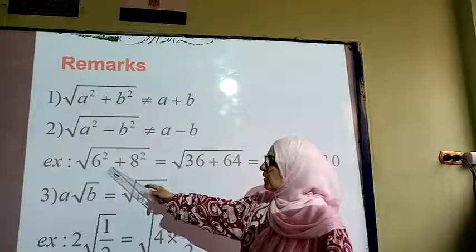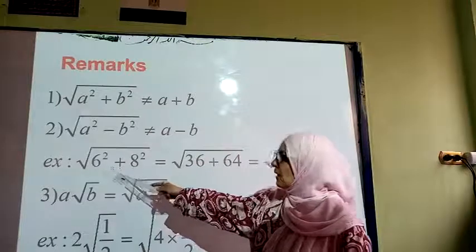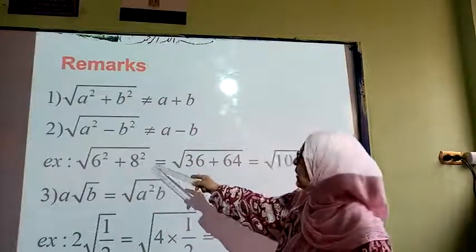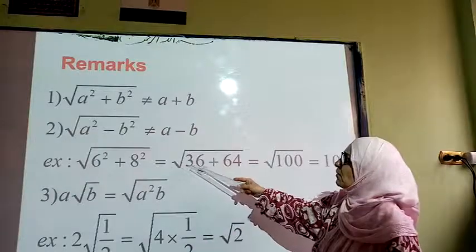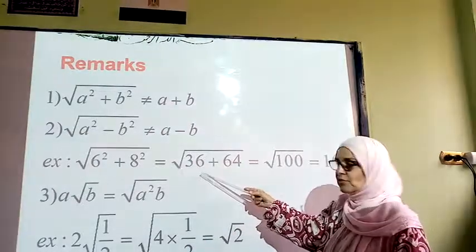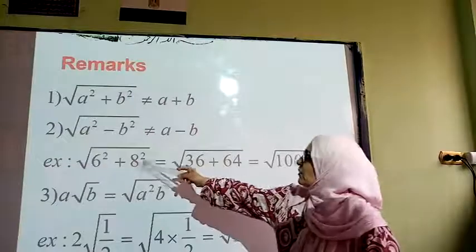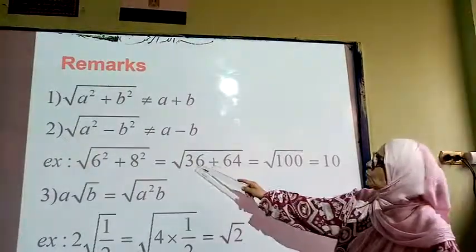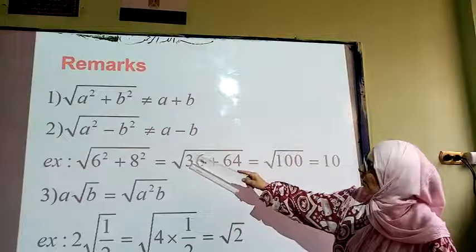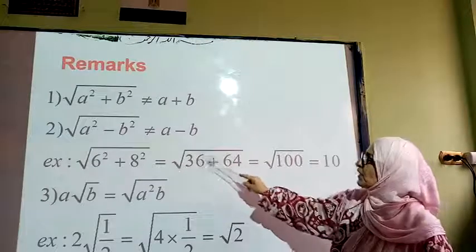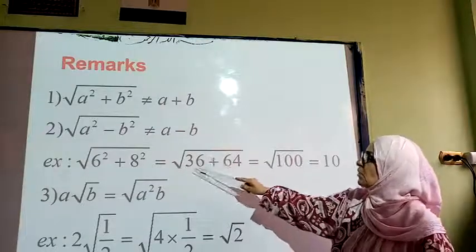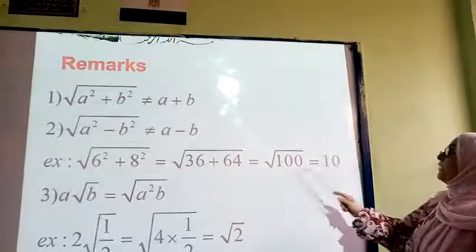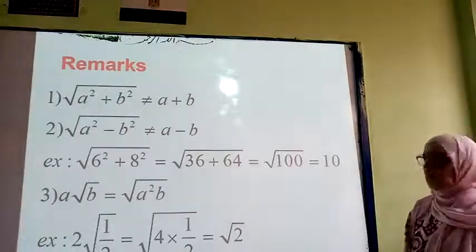You have to do the operation first and then find the root. Here is an example: root(6² + 8²) — 6² is 36 and 8² is 64. So I first do 36 plus 64 which is 100, and root 100 is 10.